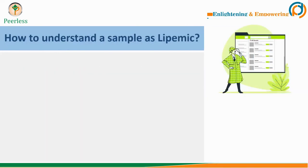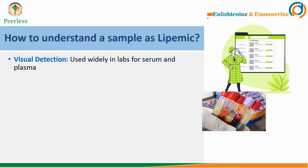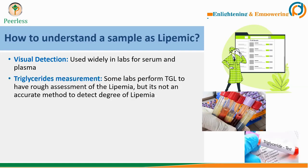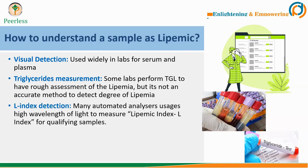It is important to understand how to determine if a sample is lipemic. The first and most common method is visual detection — you can see lipemic samples clearly in serum and plasma, and most labs use this method. Some labs perform a triglyceride test, and if the triglyceride value is above 400 mg/dL, they flag the sample as lipemic. A lipemic index can also be determined using high wavelength detection, and many large automated analyzers use this method to qualify samples.